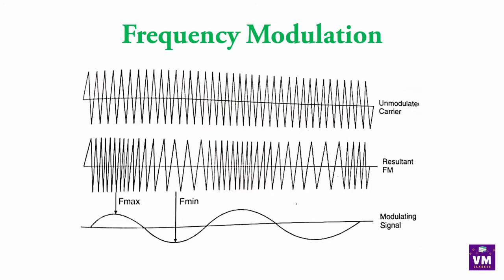Yeh figure dekho — yahan par jo first wave hai wo hai unmodulated signal, yeh resultant frequency modulation signal hai, aur yeh third waveform hai modulating signal. Jab sine wave positive side mein hai tab yahan compact wave dikhti hai (F_max), aur jab sine wave negative part mein hoti hai tab waves sparse hoti hain (F_min). Is tarah se frequency modulation mein wave transfer hoti hai.